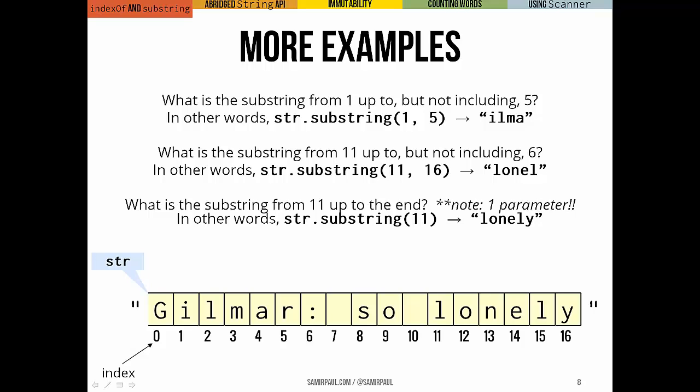If we wanted to do the same with substring, the substring from one to five will give us from this i, including the i, all the way up to the r, but not including the r. Same with 11 to 16. If we passed it a single parameter, rather than two, if we pass substring a single parameter, it'll give us from that index all the way to the end. So if we pass it only 11, this overloaded version of the method will end up giving us the entire word lonely, from 11 all the way to the end of the string. That's a second overloaded definition of the method.